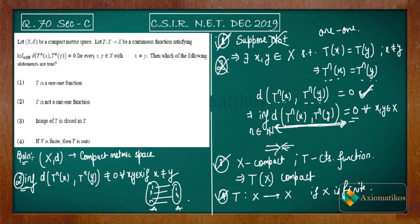You can think through this: if the domain and codomain are the same finite set and the function is one-to-one, it has to be onto. So Option 4 is correct. Finally, Options 1, 3, and 4 are correct and Option 2 is incorrect. We solved this using only basic mathematics — the positivity of distance and logical reasoning — without needing any advanced results. Thank you.